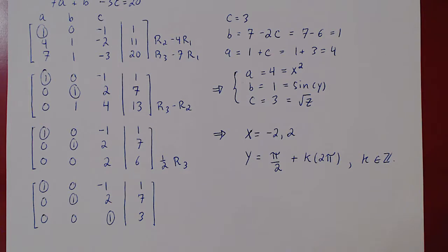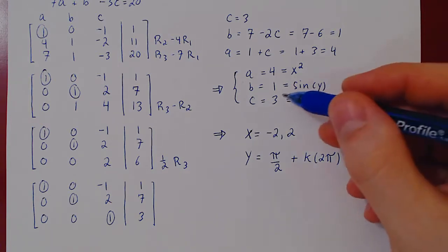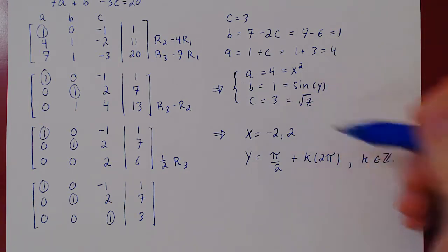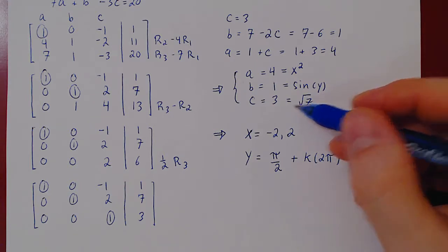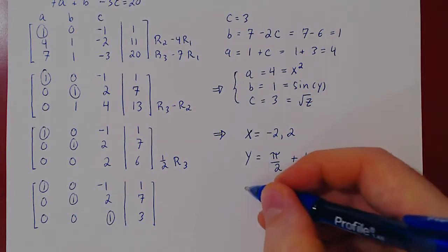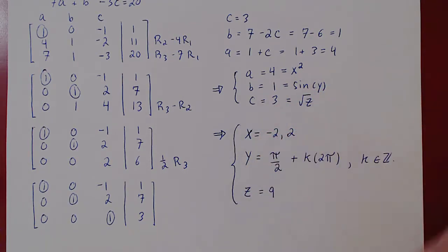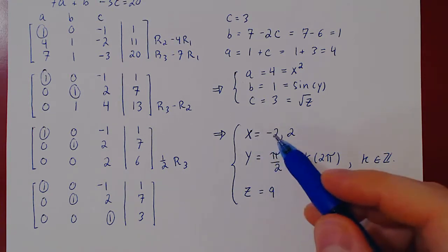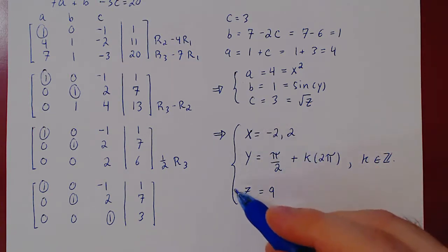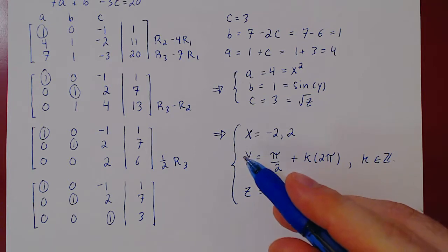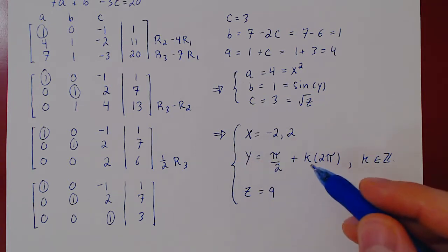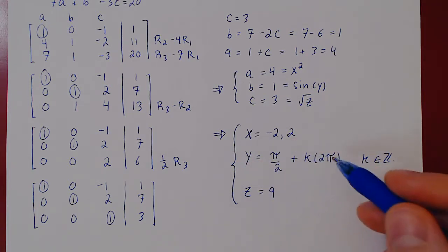And finally, if root of z is 3, clearly z must be positive, and it must be 9. And this is now the complete solution set to the original non-linear system. x either equals negative 2 or 2. z must always be 9. And y can be pi over 2 plus any integer multiple of 2 pi.